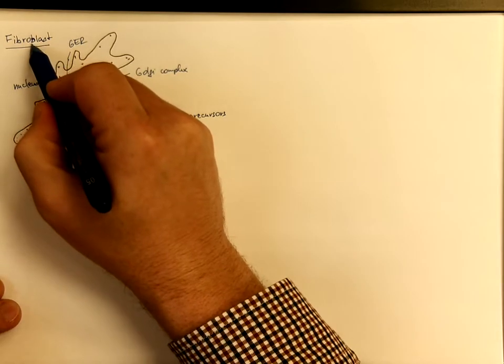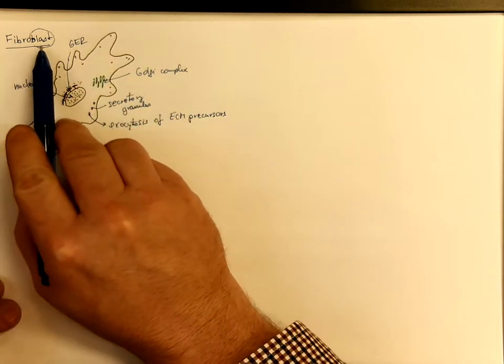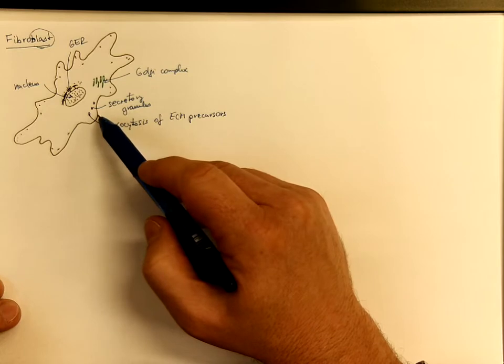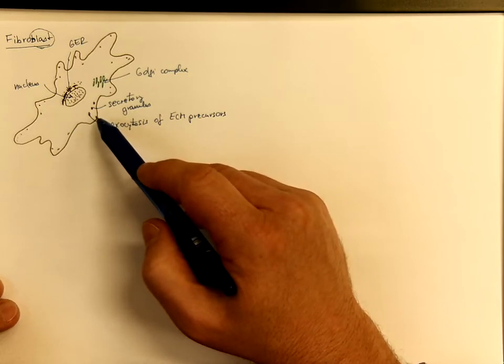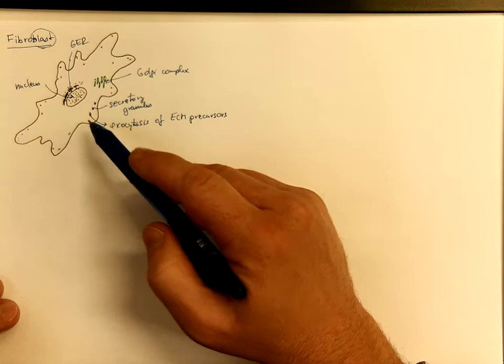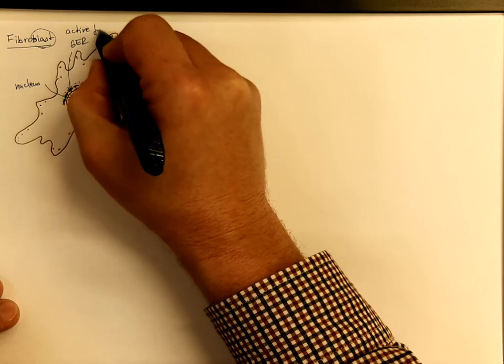If you hear the blast here in the word fibroblast, the term suggests that it is a metabolically active cell that undergoes also cell divisions. So it is kind of active form.